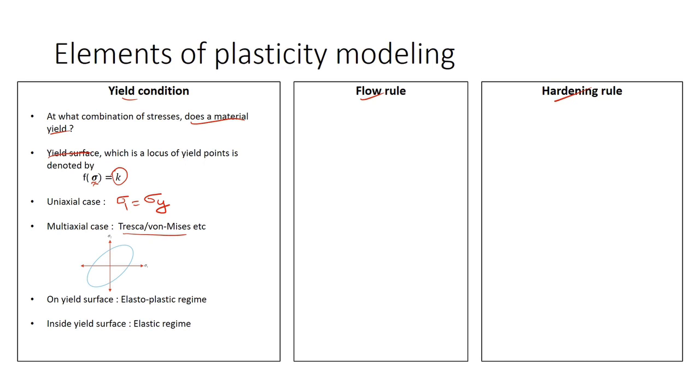I have shown here the von Mises yield surface which is an ellipse in the principal stress domain. If the stress state is on the surface, then it is in the elasto-plastic regime. If the stress state is inside the surface, then it is in the elastic regime. Note that the stress state can never go beyond the yield surface.